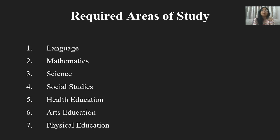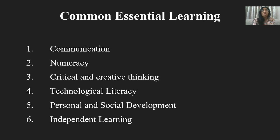The required areas of study in core curriculum are: Language, Mathematics, Science, Social Studies, Health Education, Arts Education, and Physical Education. The common essential learnings — things you must compulsorily learn — are: Communication, Numeracy, Critical and Creative Thinking, Technological Literacy, Personal and Social Development, and the ability to learn independently.